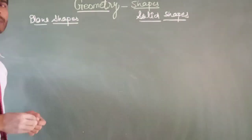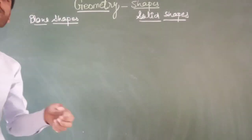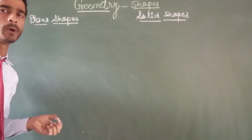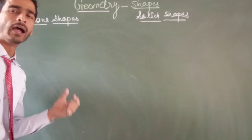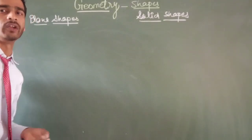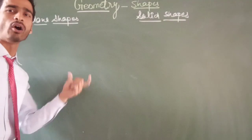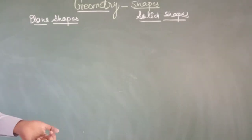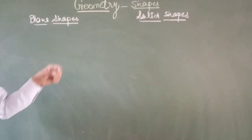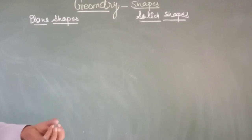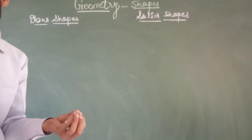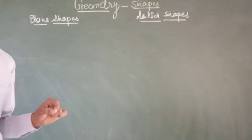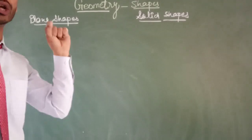Firstly, let's discuss about Plane Shapes. Figures that can be drawn on a plane — like paper, ground, or a blackboard — are called plane figures. Plane shapes can be drawn on a flat surface such as a paper, and they have only length and breadth. They have sides and corners.